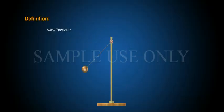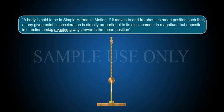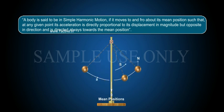Definition of SHM: A body is said to be in simple harmonic motion if it moves to and fro about its mean position such that, at any point, its acceleration is directly proportional to its displacement in magnitude, but opposite in direction and is directed always towards the mean position.